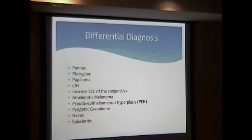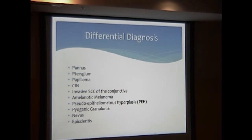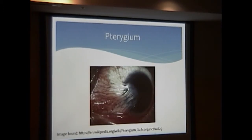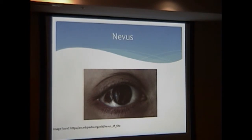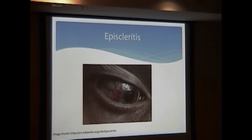So here's just a list of some of the things that I came up with as well. Dr. Swan just gave us a great summary of some of the things to be thinking about. When you think about papilloma, conjunctival intraepithelial neoplasia, and invasive squamous cell carcinoma of the conjunctiva, it's pretty difficult to differentiate those by looking alone — it would probably require biopsy or impression cytology to get the correct diagnoses. Other differentials include lymphoma, and Kaposi's sarcoma could also be considered. Here's a picture of a pterygium, a nevus, which has also been noted in the differential, and episcleritis.